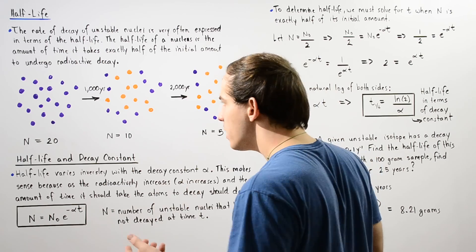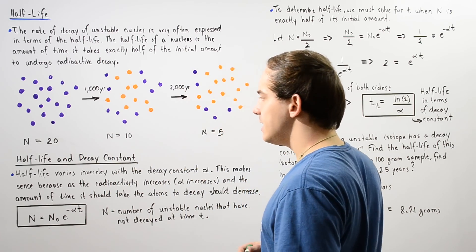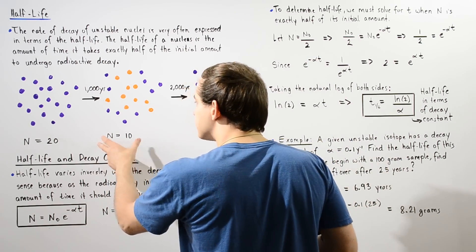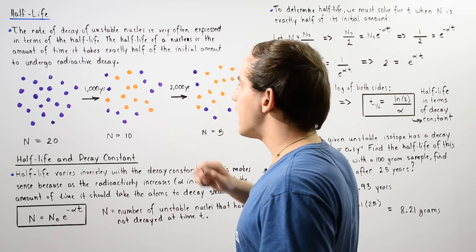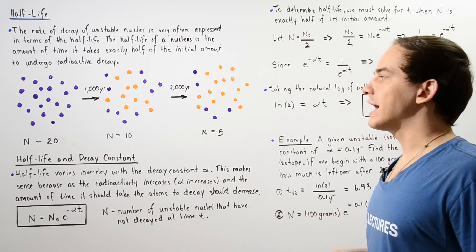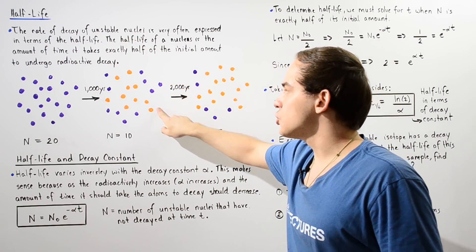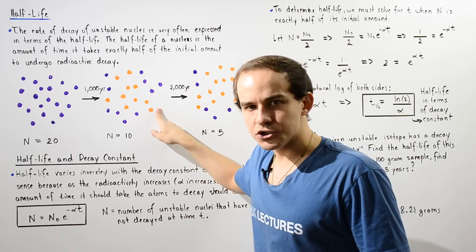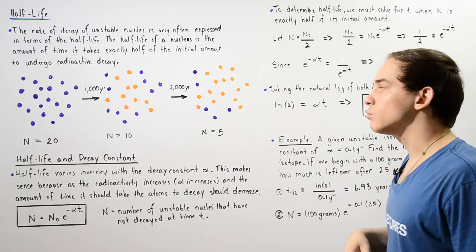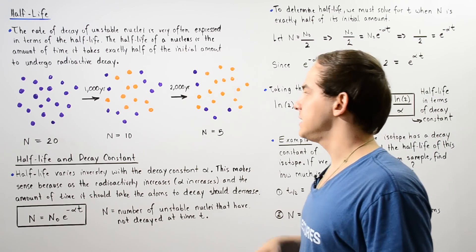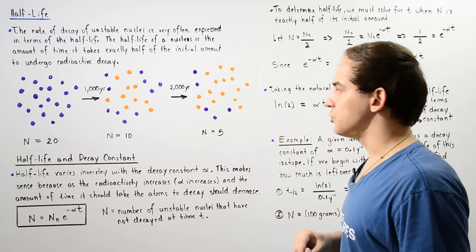So after one half-life, or 1,000 years, we'll have 10 atoms left over that have not yet undergone radioactive decay. The other 10 atoms, shown in orange, are the atoms that have undergone radioactive decay and became the more stable daughter nuclei.